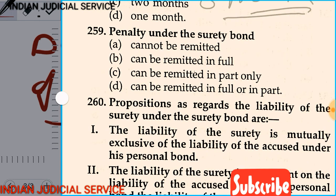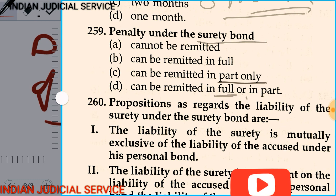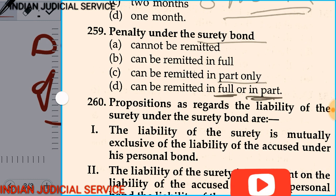Question number 259: The penalty under the surety bond — option A: cannot be remitted, option B: can be remitted in full, option C: can be remitted in part only, option D: can be remitted in full or in part. The answer is option D: the penalty under the surety bond can be remitted in full or in part.